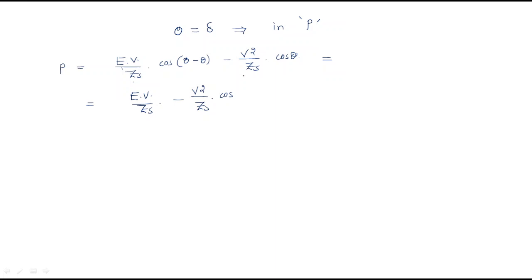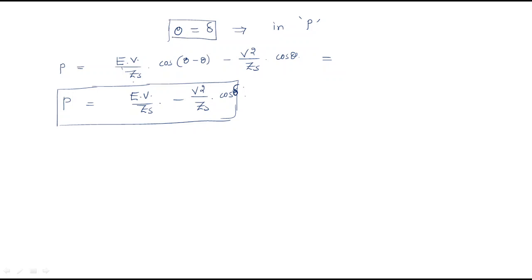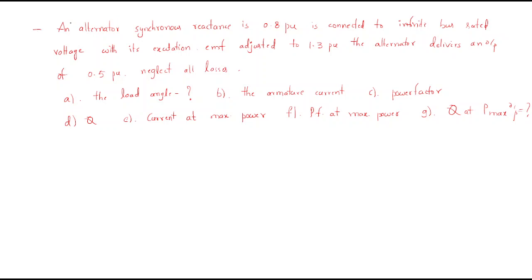So the maximum power equation is: P_max = EV/Zs - V²/Zs·cosθ. Here cos(δ-δ) becomes zero inside the angle term, confirming our result. This is the maximum power equation: P_max = EV/Zs - V²/Zs·cosθ.